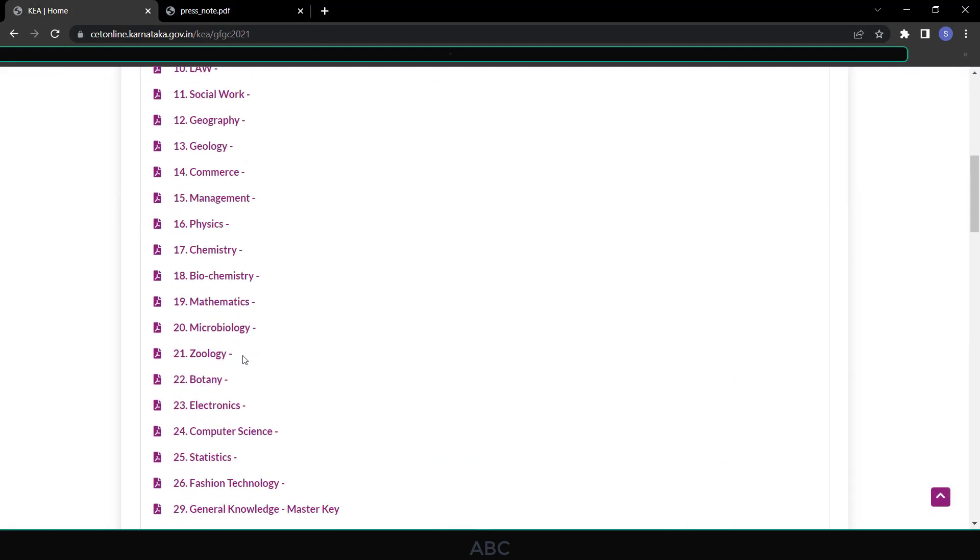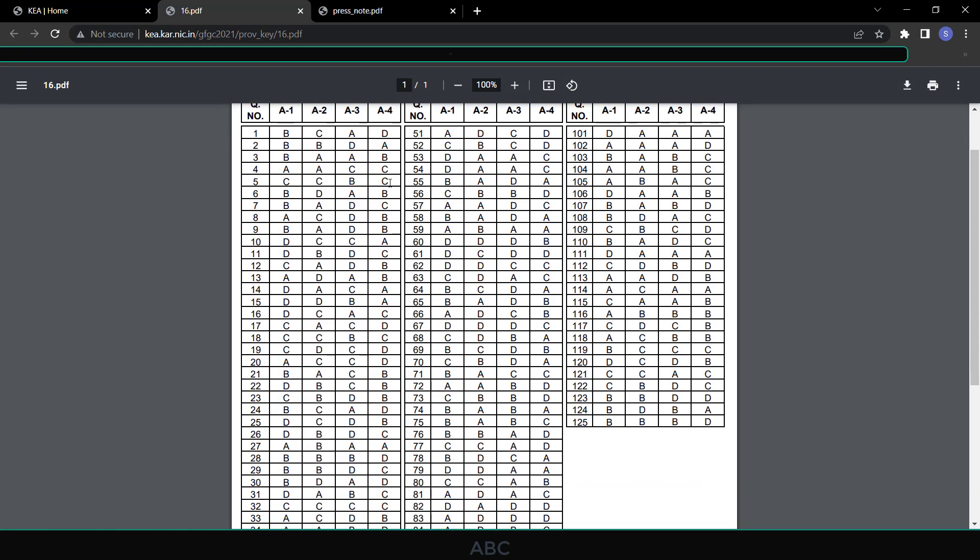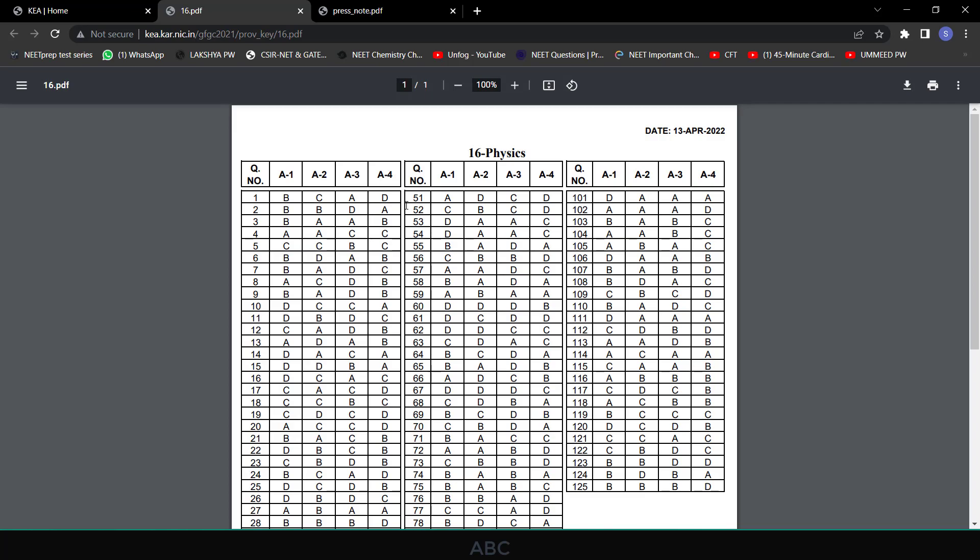I have seen the provisional answer key for physics. The paper which I have solved in my YouTube channel Unfog with Dr. Athar Parveen is A4. My question paper was A4 and our code is of course 16 for physics. Please follow this code A4, the question paper which I have solved in my YouTube channel so that you can relate with the question numbers.